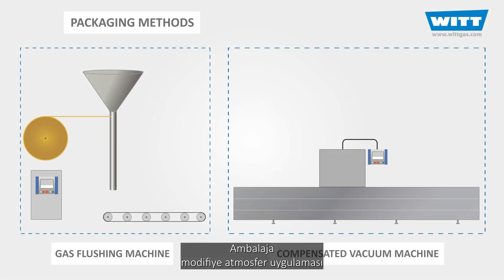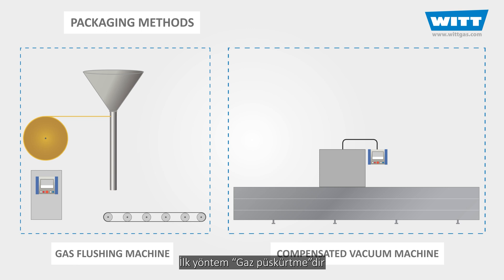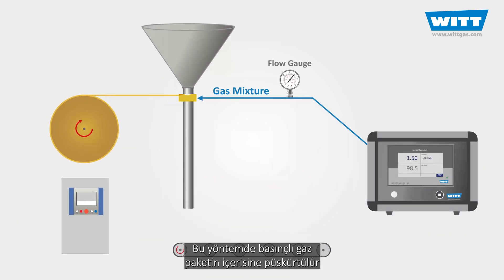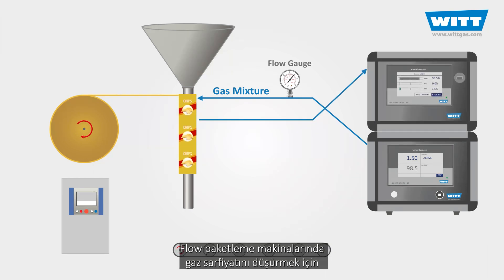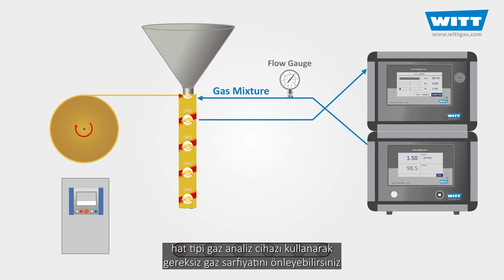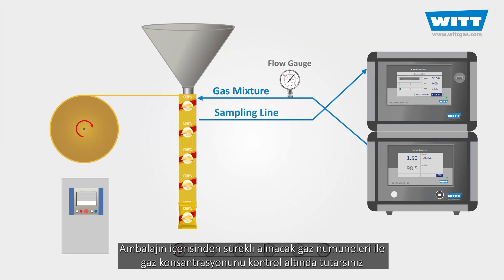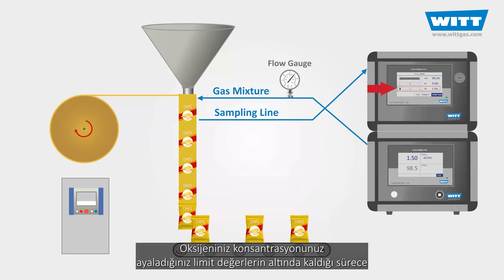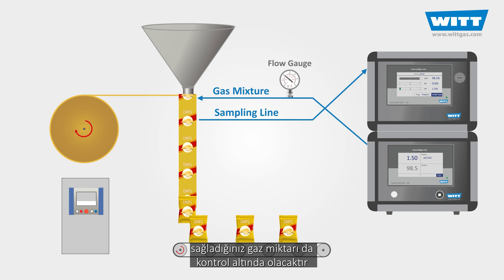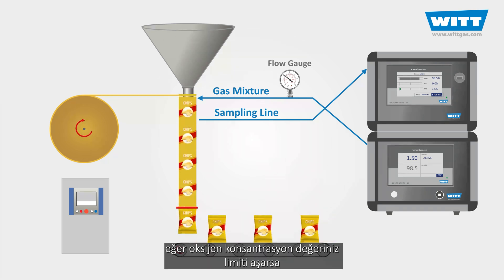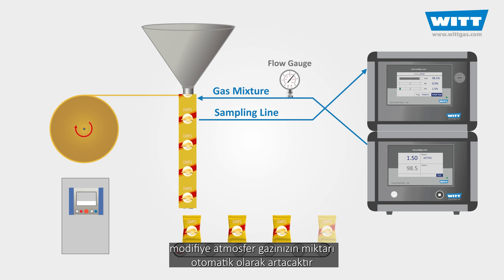How the modified atmosphere is applied to the packaging depends on the type of machine used. The first method is called gas flushing, where a pressurized gas stream is inserted into the food package so that the desired gas mixture replaces the air inside. Using an in-line analyzer, it's possible to reduce the amount of gas and save money in flow pack machines. A sample is taken continuously from the pillow bag via a lance and analyzed. As long as the oxygen value is below the set limit, the amount of protective gas is reduced; if it approaches the limit, the protective gas quantity is automatically increased.